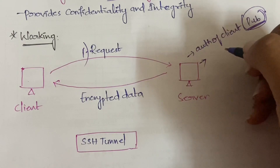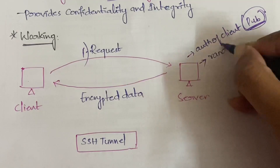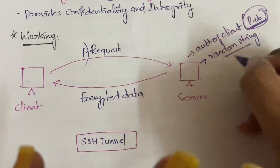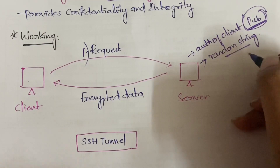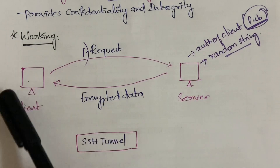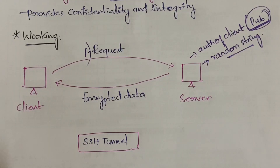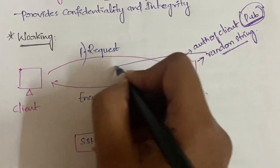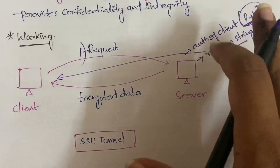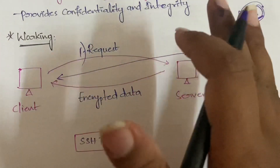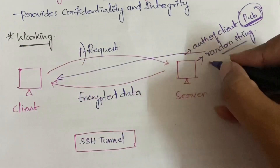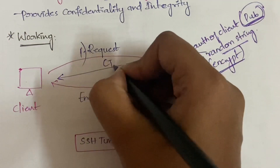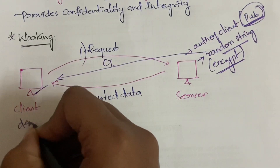Once the server identifies that the public key is matching and correct, it generates a random string. This random string is not the actual data being transferred — it is only for checking authentication between the client and server. The server encrypts this random string using the client's public key and sends the cipher text to the client.